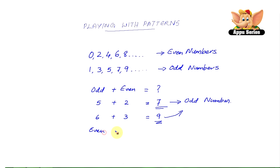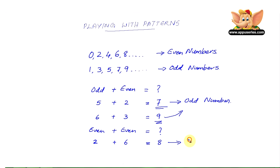If you add two even numbers, you always get an even number. For example, 2 plus 6 equals 8. Or, 14 plus 6 equals 20.